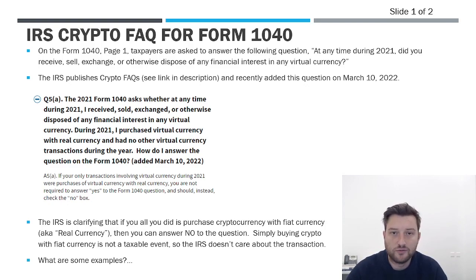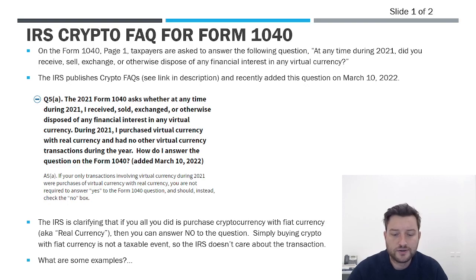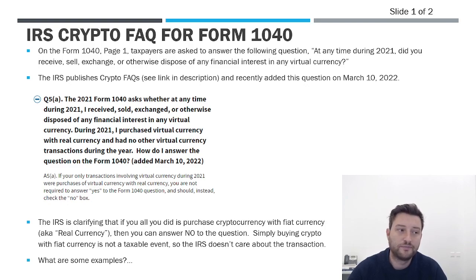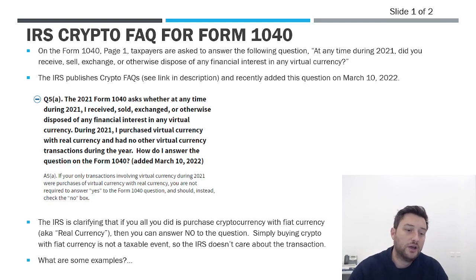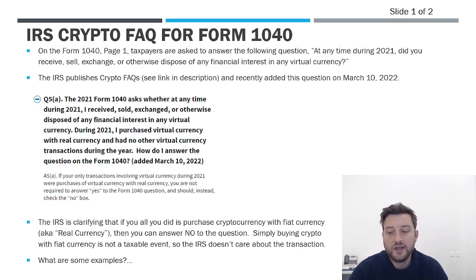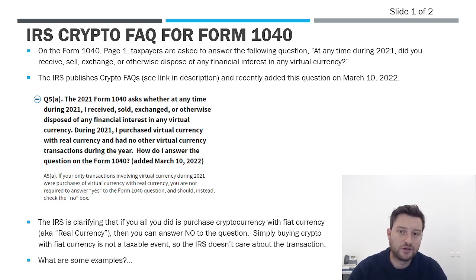What are some examples of when I would answer yes versus no? The idea here is what they're really trying to get at is: did you have a transaction that is a taxable capital gain or loss during the year, or did you receive cryptocurrency as income — meaning that you performed some service or sold a product and received cryptocurrency in exchange for that? Under those types of circumstances, you would have to report some type of income on your return, and that's really what they're getting at here.